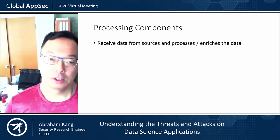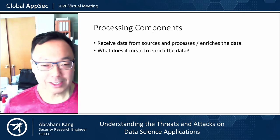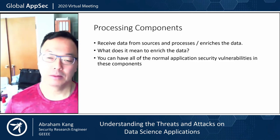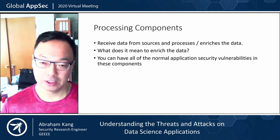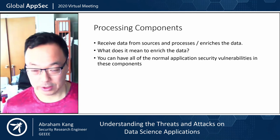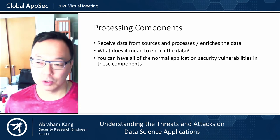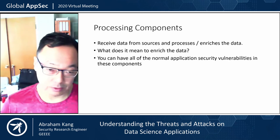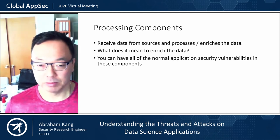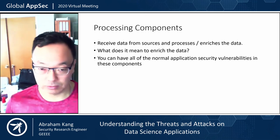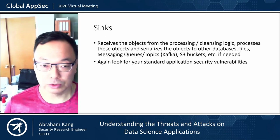Processing components receive data from sources and process or enrich the data — taking data from other systems and adding more data to the existing data. What you'll find here are the normal application security vulnerabilities: SQL injection, file path manipulation, and so on, because this is where the bulk of the business logic for data cleansing and enrichment occurs, and it's connecting to all these different systems. These components could also make calls to REST applications, so you have server-side request forgery possibilities.